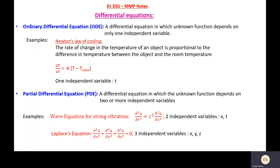But what if there are two or more independent variables? Then we have a partial differential equation — a differential equation in which an unknown function depends on two or more independent variables. For example, the wave function for string vibration depends on two independent variables, X and T. Similarly, Laplace's equation contains three independent variables: X, Y, and Z.